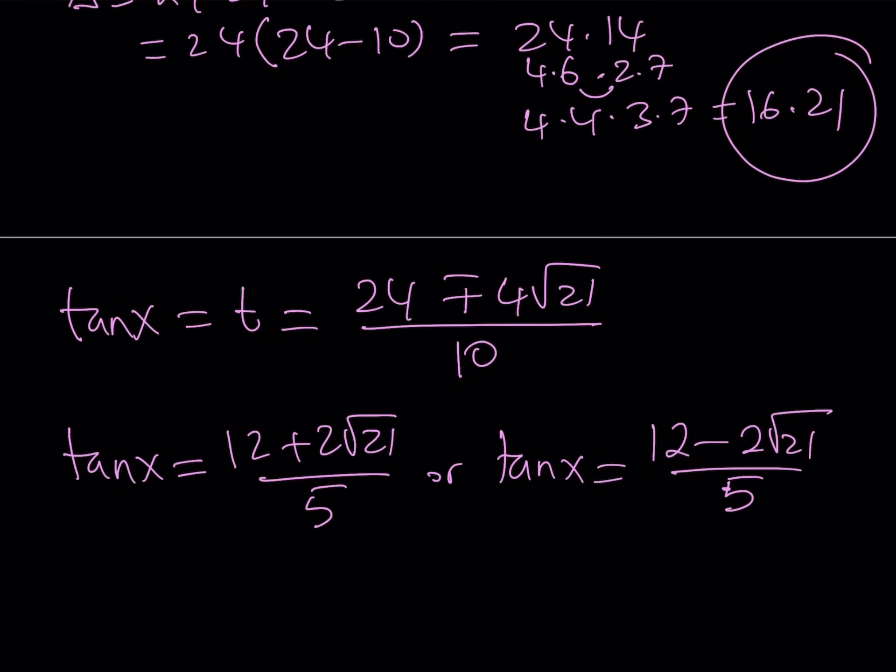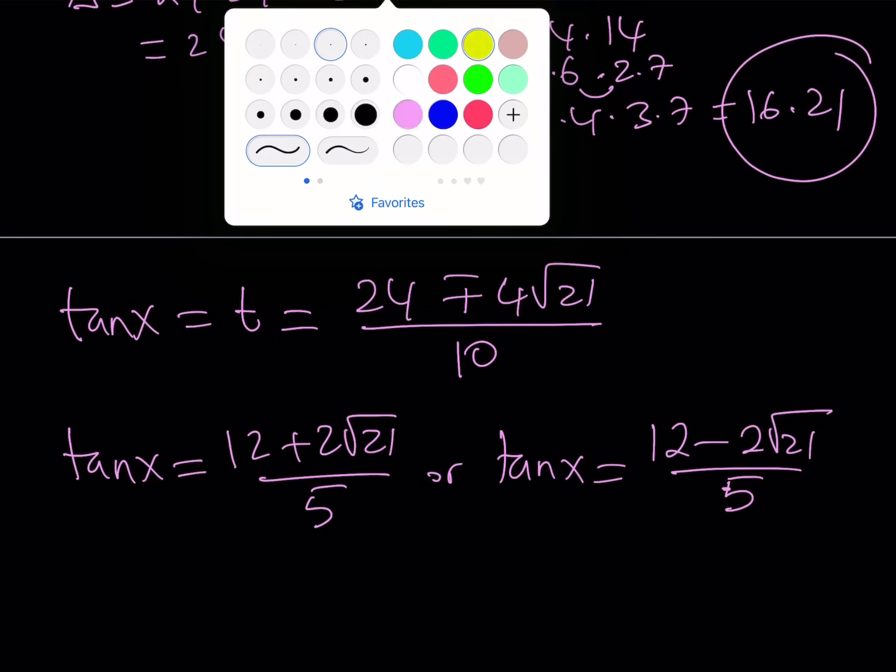So that's my expression, but it can be simplified. And this gives us two values. So tangent x is either 12 plus 2 root 21 over 5, or tangent x can be 12 minus 2 root 21 over 5. Now, obviously, these values need to be checked. But let me tell you that they do verify. The reason why we check is because we squared both sides. So that could introduce extraneous solutions.